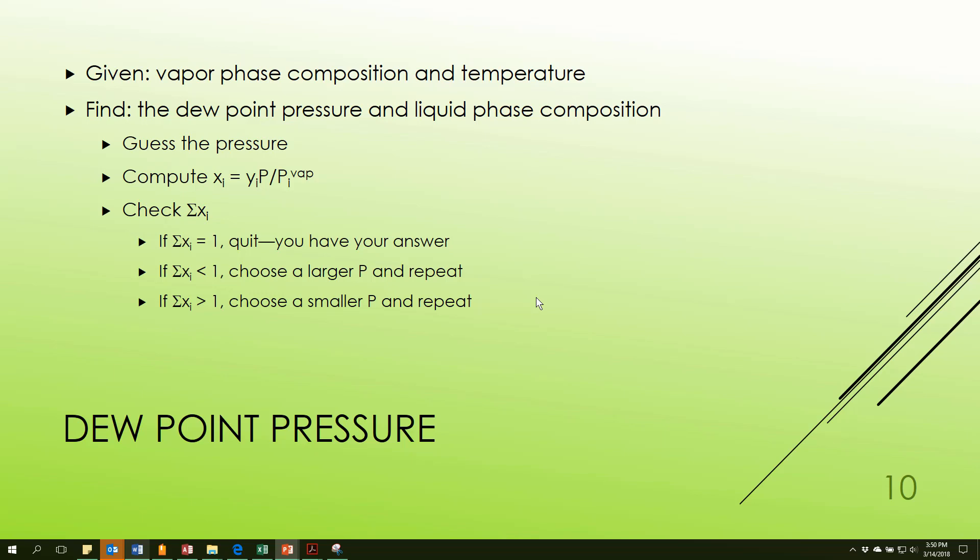So what about the dew point pressure? So instead of being given liquid composition, now I'm given vapor composition. So vapor composition and temperature are given. I want to find the pressure and the liquid phase composition. So what I need to do first is just guess what you think the pressure might be. I can tell you it's going to be somewhere in the range of the vapor pressures of the pure, so start with that. Then calculate what the liquid phase composition should be based on that total pressure. I know the temperature, so I can come up with vapor pressures. I know the vapor compositions. I can therefore calculate the liquid phase composition. Add all of those answers up. See if they equal one. If it's equal to one, then you're done. You've got the right choice. If it's less than one, choose a larger pressure. If it's greater than one, choose a smaller pressure. And repeat until you get something that's close enough to being equal to one.